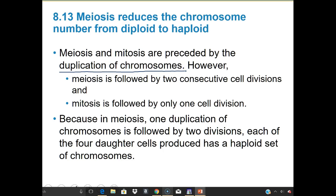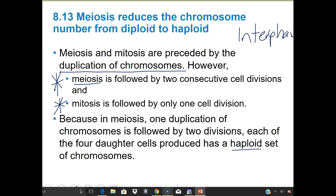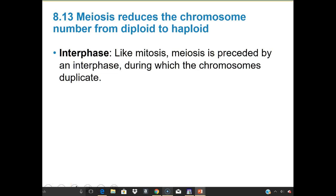Both mitosis and meiosis are preceded by duplication of the chromosomes, meaning both have an interphase and an S phase beforehand. However, meiosis is followed by two consecutive cell divisions, whereas mitosis was only followed by one. Because one duplication is followed by two divisions in meiosis, each of the four daughter cells produced has a haploid set of chromosomes — one complete set.